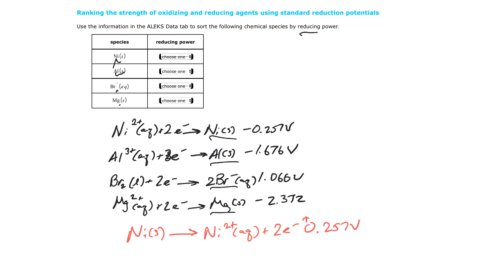So by switching them, this switches to positive, this switches to positive, this goes to negative, this goes to positive. So let's rewrite that. This one is going to be positive 2.372. This is going to be negative 1.066. These are all in volts. This is going to be positive 1.676 volts. And this is going to be positive 0.257 volts.